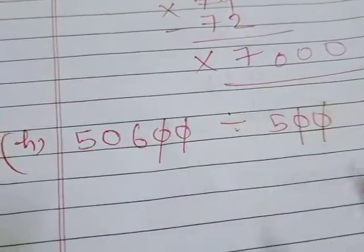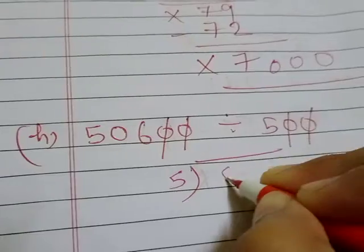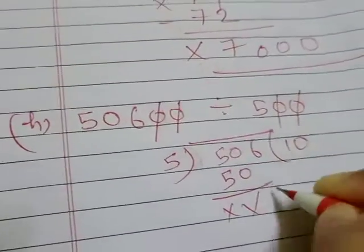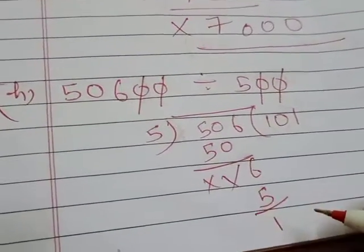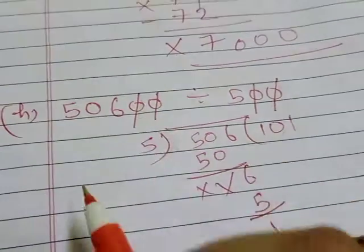Now then, 506 divided by 5. Five tens are 50, then six - five ones are five - one will be left here, right? And whatever zeros are cancelled, those zeros will be shifted down like this.